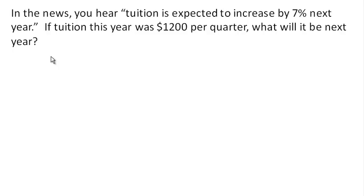So there's a couple ways that we could think about this. One way would be to say that if we're going to add an additional 7% on top of the tuition, then next year will be our original 100% plus an extra 7%, or in other words, 107% of this year's.